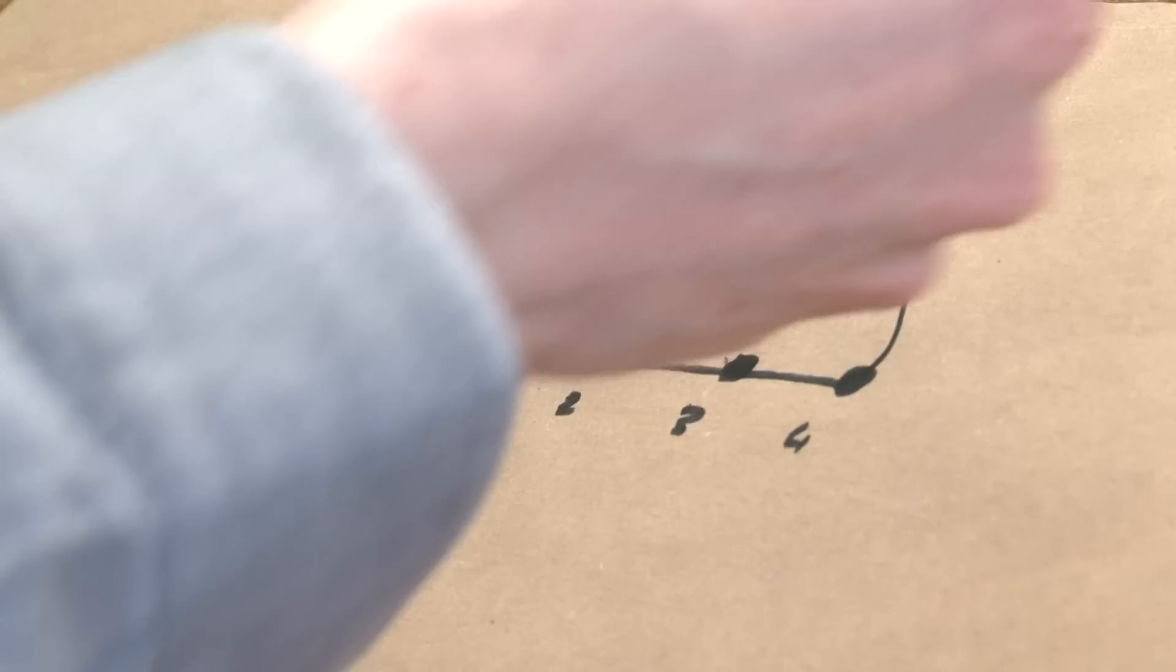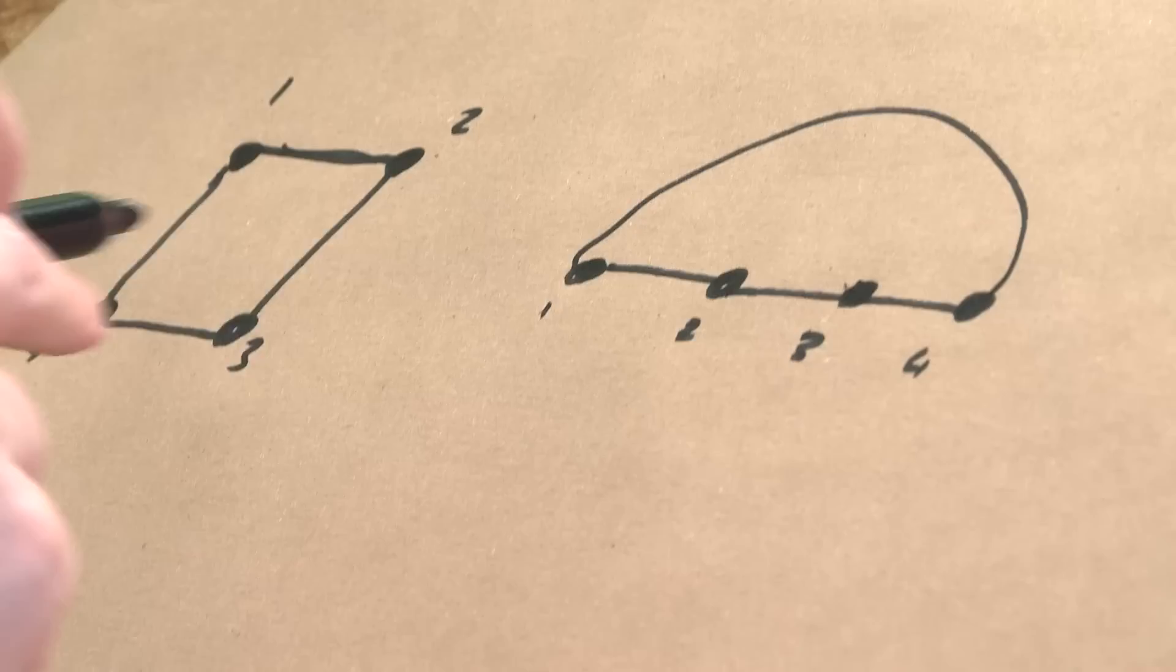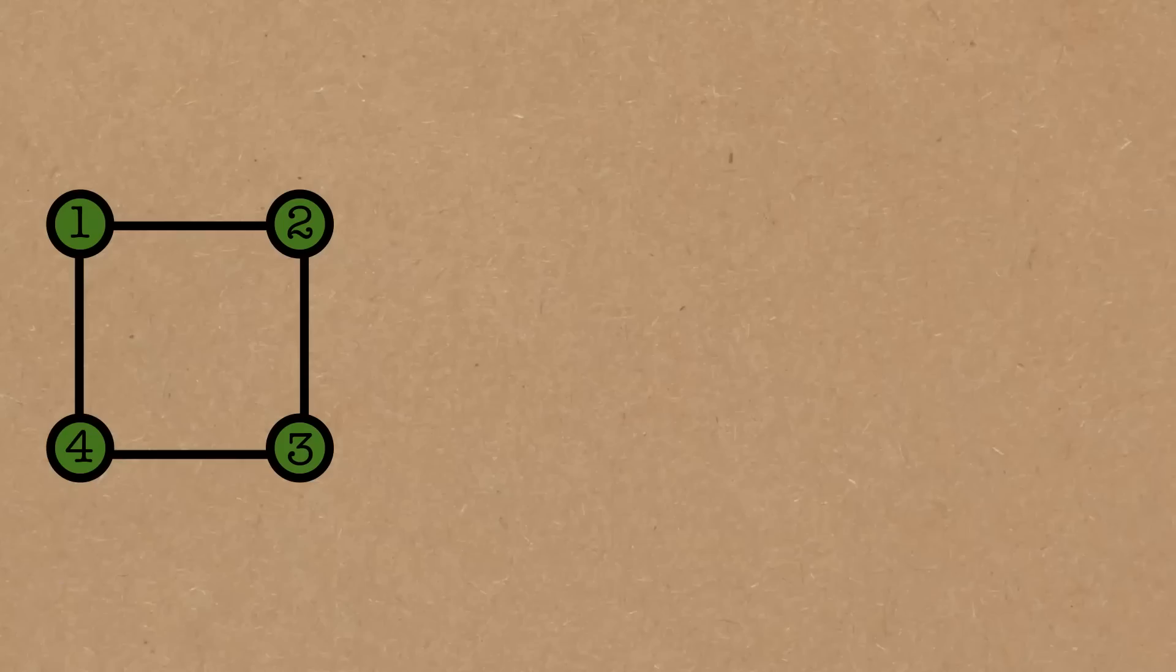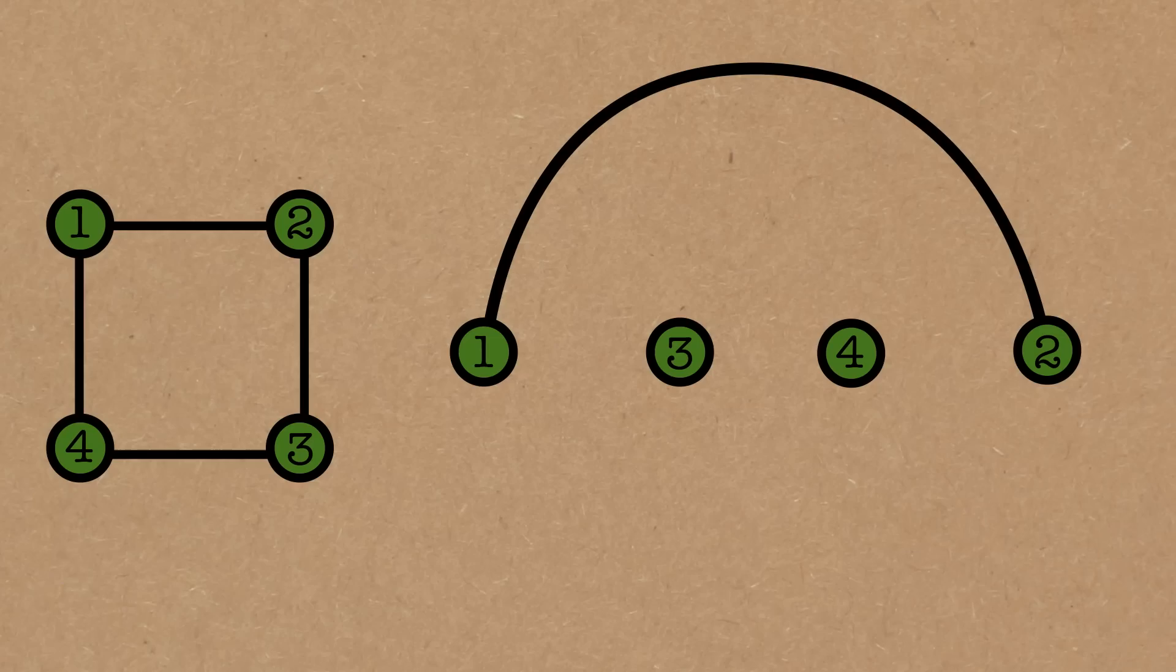It does depend on the order of your vertices here. So if I do a different order, you get a different book. Let's do one, three, four, two. Then what do I need? One connects to two like that. Two connects to three, three connects to four, four connects to one. So I've created a two-page book.